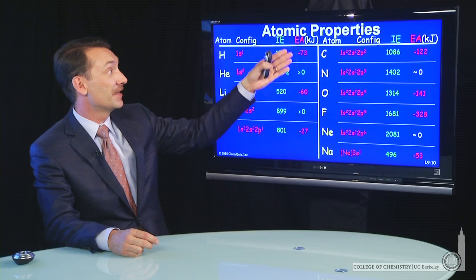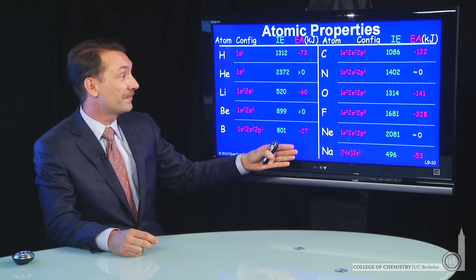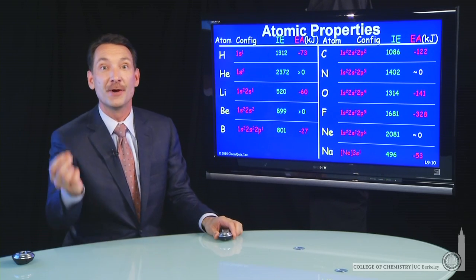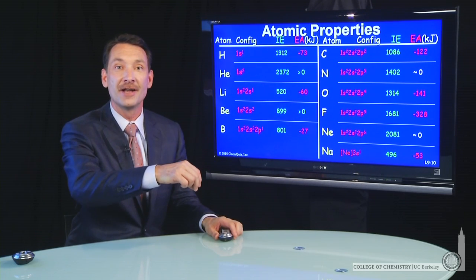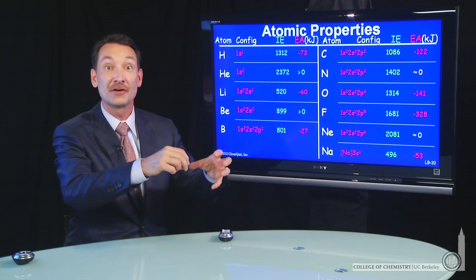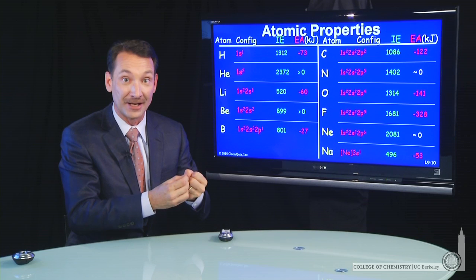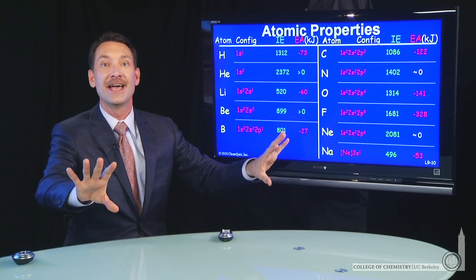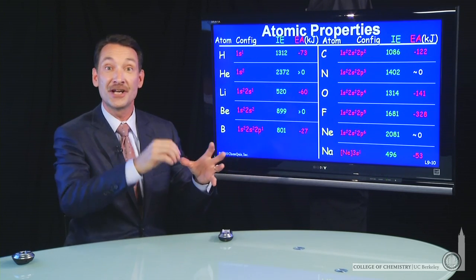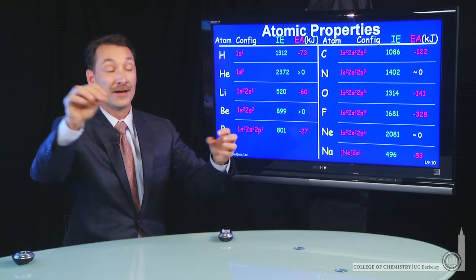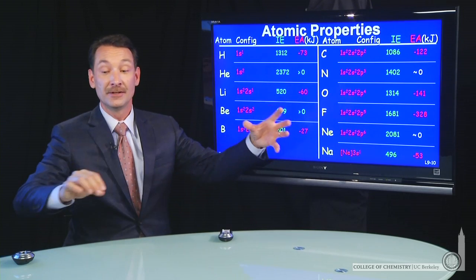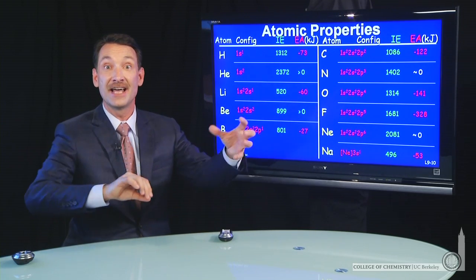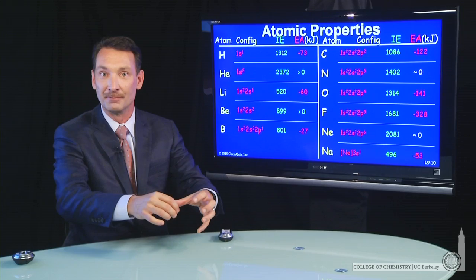One of the first things you notice is that the electron affinities are generally negative. That is, if you add an electron to an element, it generally accepts that electron, goes to a more stable state, releasing energy. So electrons are generally accepted — a free electron and an atom, the most stable state is that electron attached to the atom.